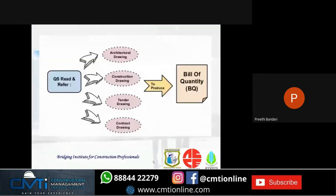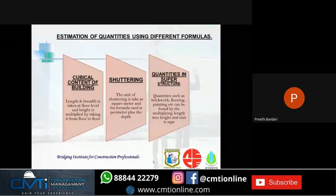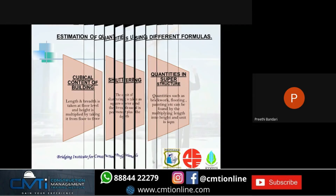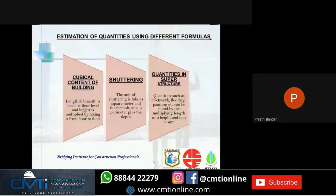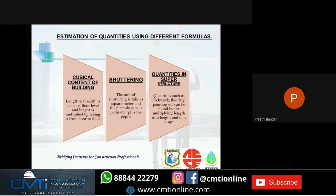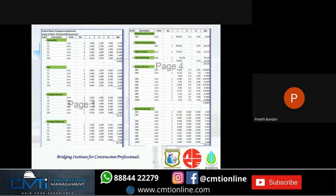The QS uses all the architecture, construction drawing, tender drawing, and contract drawing to produce the bill of quantities. Before the bill of quantities is made, there is estimation of quantities — a summary is made. For excavation and PCC footing, you take length, breadth, and the floor height; this is measured in cubic meters. In case of shuttering, you take the area of the place and the formula uses the perimeter plus the depth. When taking quantities in the superstructure — that is, brickwork, flooring, painting, which are the architectural details — you take length by height, that is the area of the building. This is one of the examples I've done.